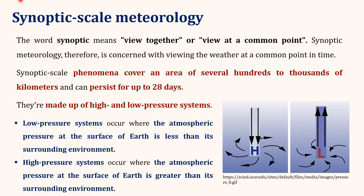Next is synoptic scale meteorology. The word 'synoptic' means 'view together' or 'view at a common point.' Synoptic scale meteorology is concerned with viewing the weather at a common point in time. These phenomena cover an area of several hundreds to thousands of kilometers and can persist for up to 28 days, and they are made up of high and low pressure systems. Low pressure systems occur where the atmospheric pressure at the surface of the earth is less than the surrounding environment, while high pressure systems occur where the atmospheric pressure is greater than the surrounding environment.